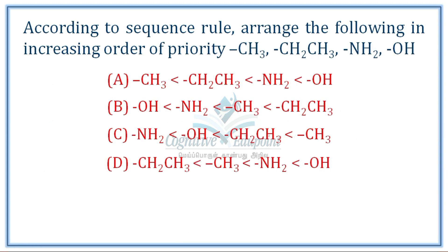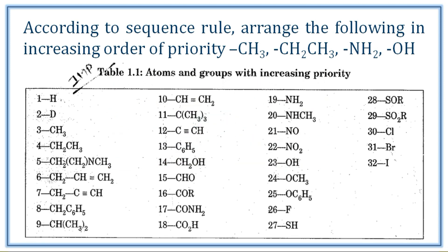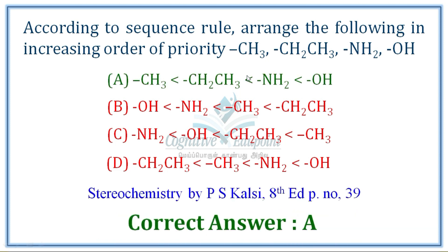Next question: according to the sequence rule (CIP), arrange the following in increasing order of priority. The most important rule is highest atomic number = highest priority, and lowest atomic number = lowest priority. The first atom connected to the chiral carbon is considered. Priority order: oxygen > nitrogen > carbon. For example: OH > NH2 > CH2 > CH3. Correct answer is A.